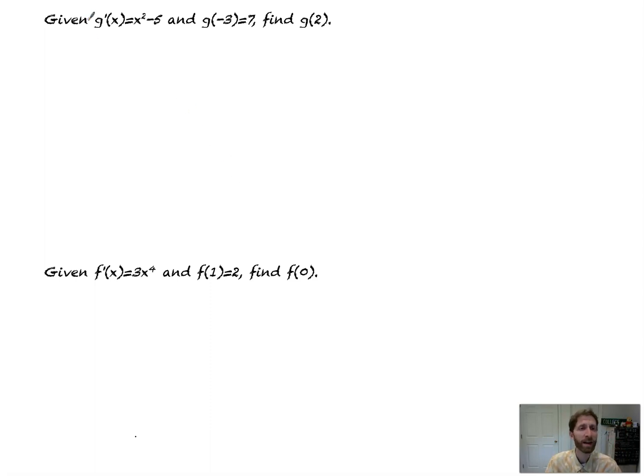Let's see what we're talking about here. Given g prime of x equals x squared minus 5 and g of negative 3 equals 7, so g prime asked about g. Find g of 2.